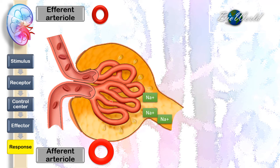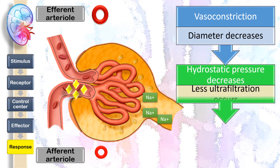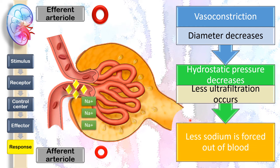But the current situation is that the blood does not have enough sodium, so it cannot waste the little sodium it already has. What angiotensin 2 will do is cause the afferent arteriole to vasoconstrict — the diameter of the arteriole will decrease. In this way, the hydrostatic pressure at the glomerulus decreases, causing less ultrafiltration to occur. So less sodium is forced out of the blood, and sodium can be maintained in the blood.